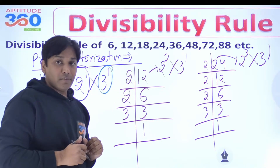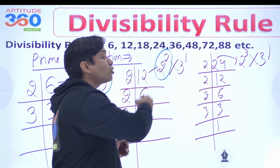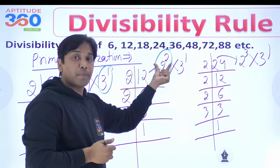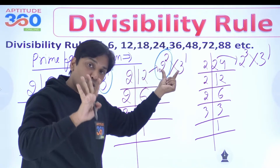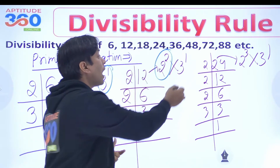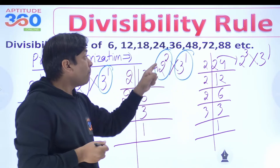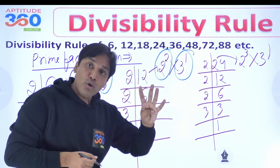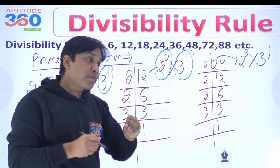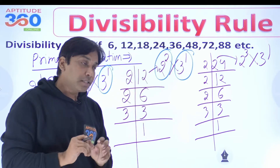How about 12? In the case of 12, you don't have to be confused. 2 to the power 2 is 4, and you know the divisibility rule of 4 and the divisibility rule of 3. A number which is divisible by 4 and by 3 is divisible by 12. It is guaranteed.